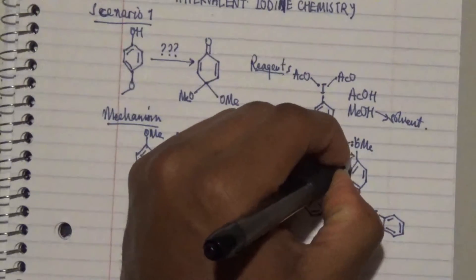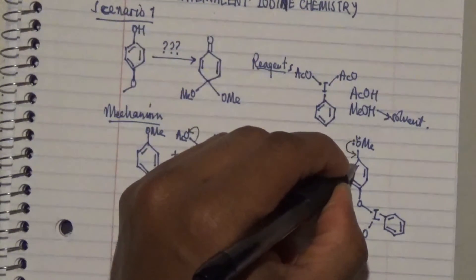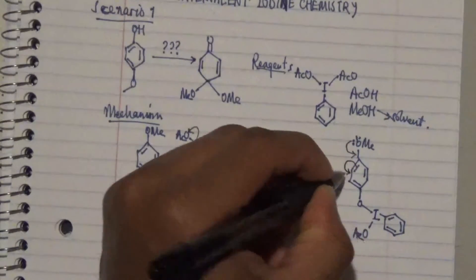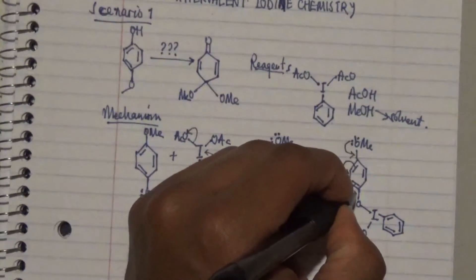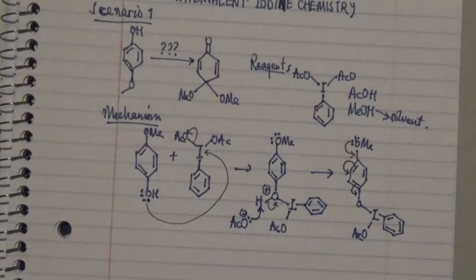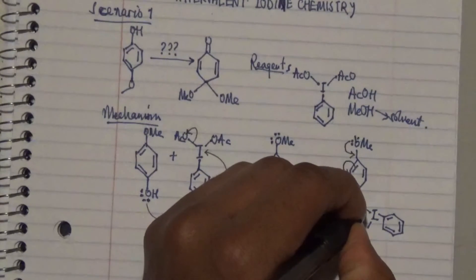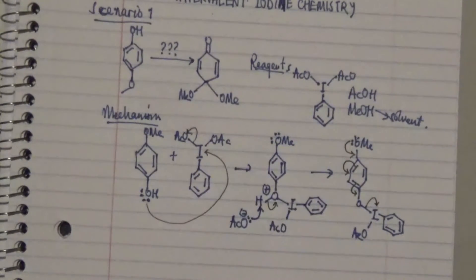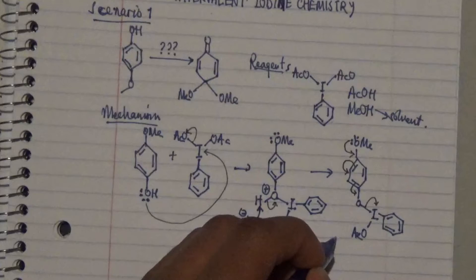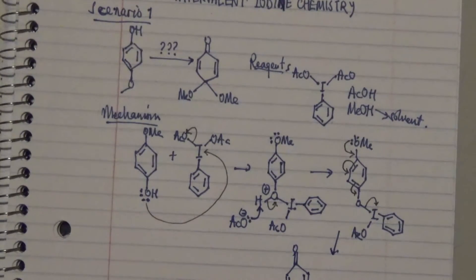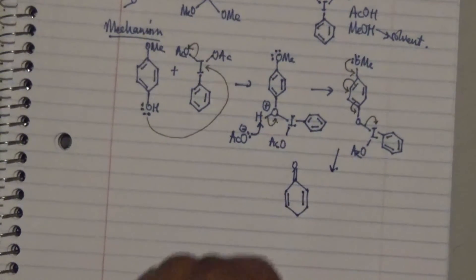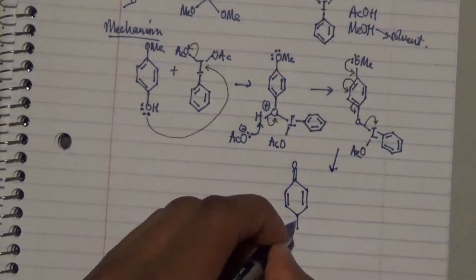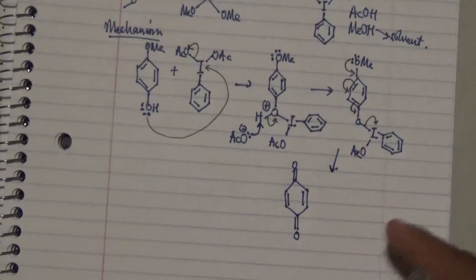Another reaction that can happen is that this lone pair on the oxygen moves over there, and then this pi system rearranges itself in such a way that you form a double bond, and then this particular bonding pair becomes a lone pair on this particular iodide. As a result, you're going to form a compound while this iodide leaves.